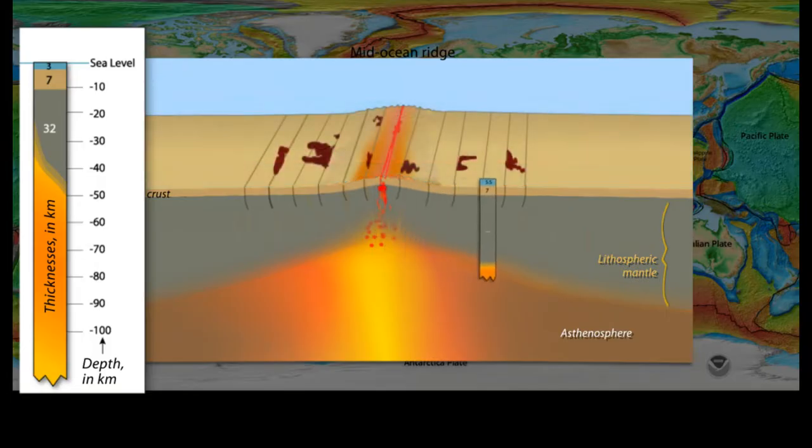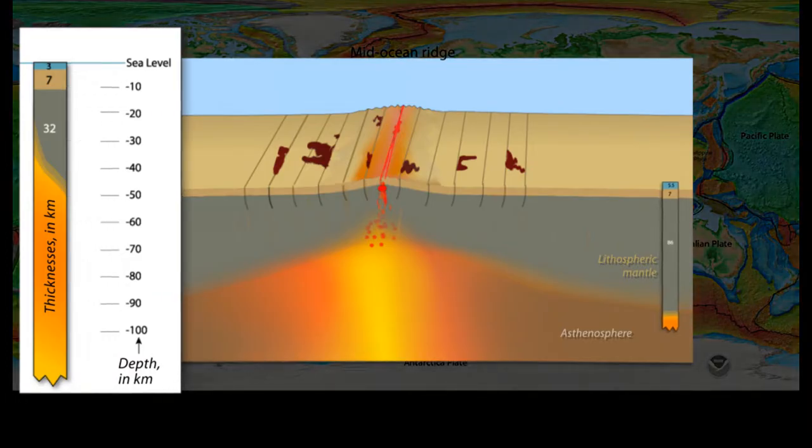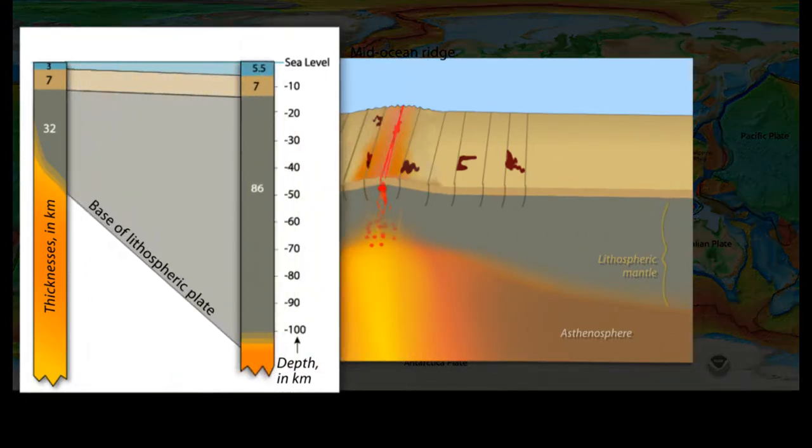Thus, although the crust maintains its thickness during migration away from the ridge, the lithospheric plate thickens and cools to create ocean basins that extend 5 kilometers in depth.